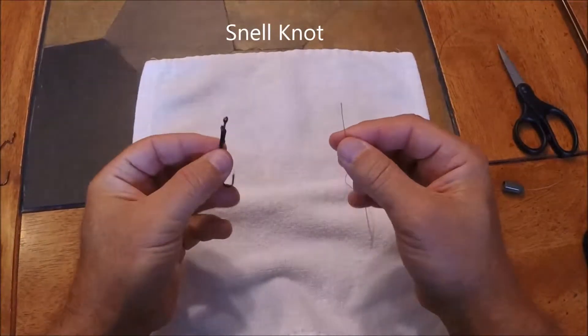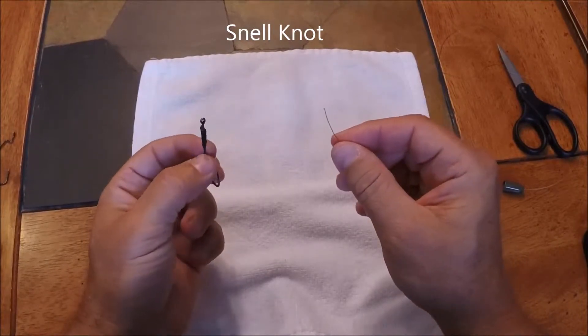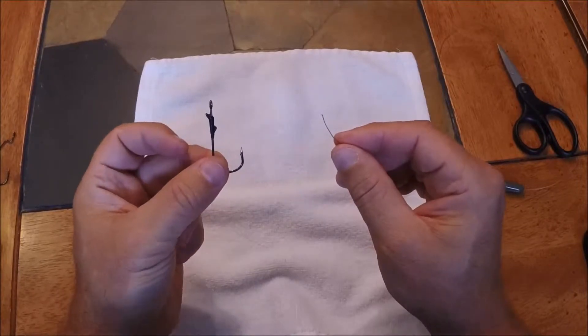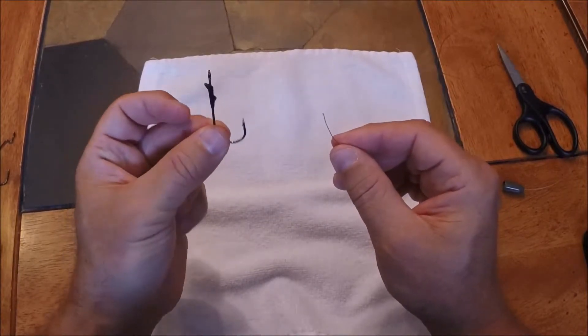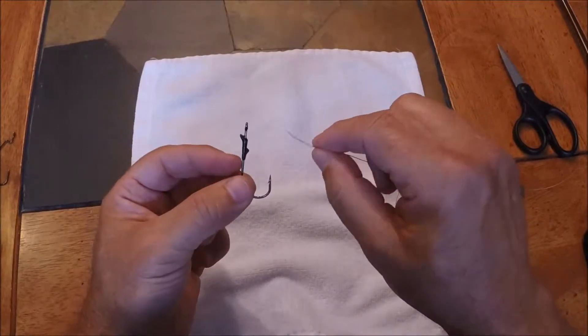The second knot I'm going to show you is called a Snell knot. Snell knots are used in saltwater applications but also in bass fishing. They're used on punching rigs and this is a punching hook. I'll explain how to use a punching rig in a whole other video.